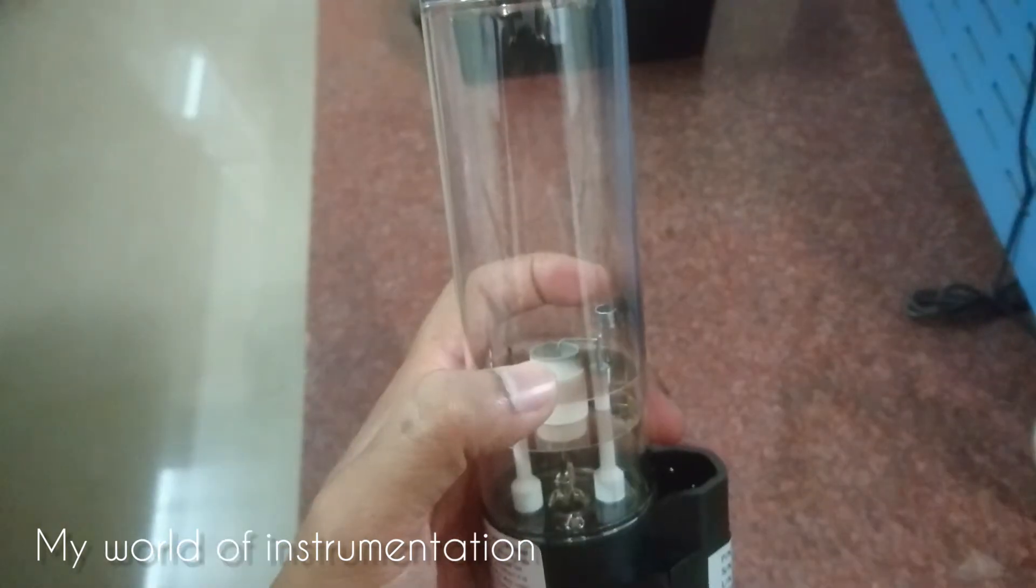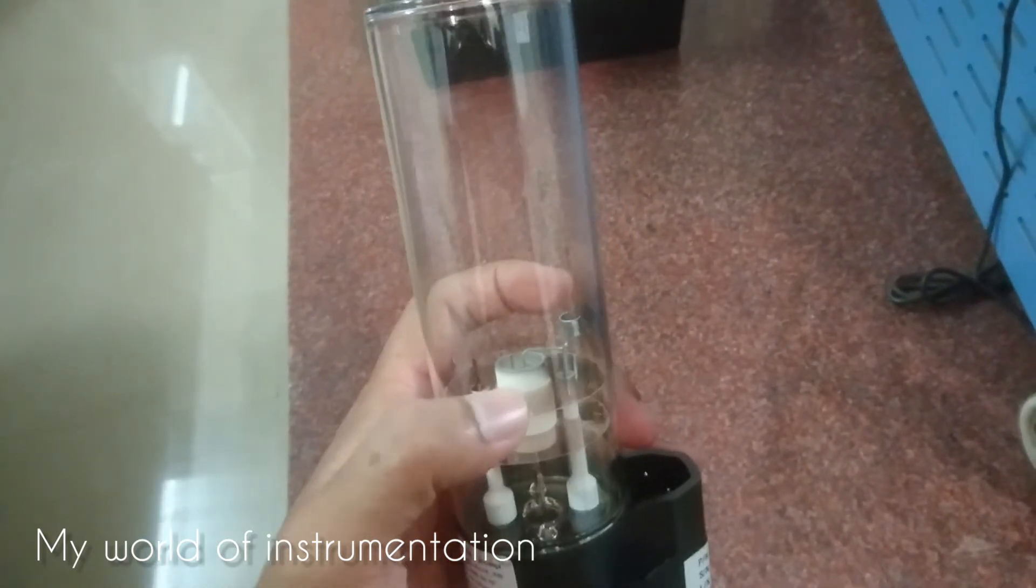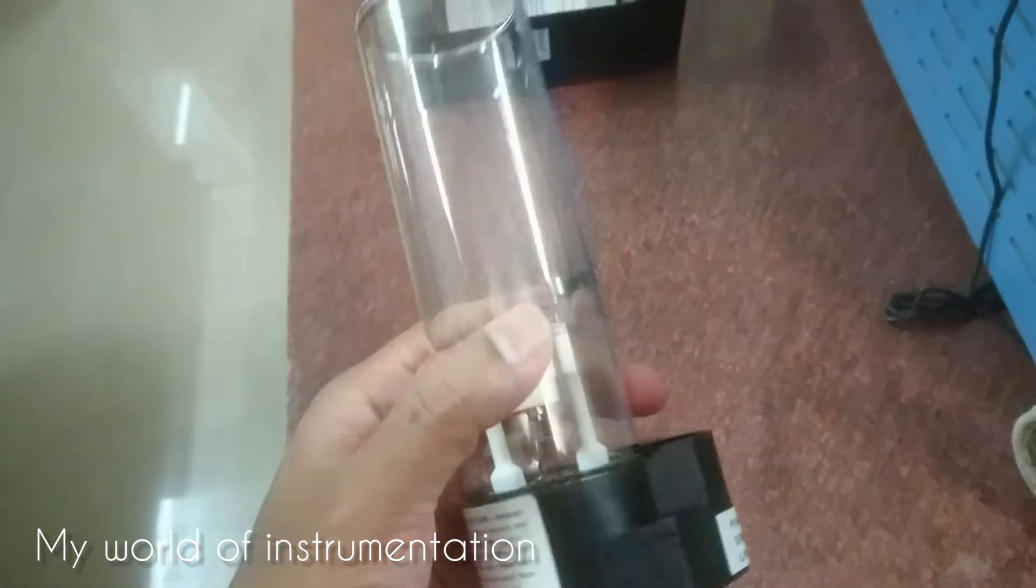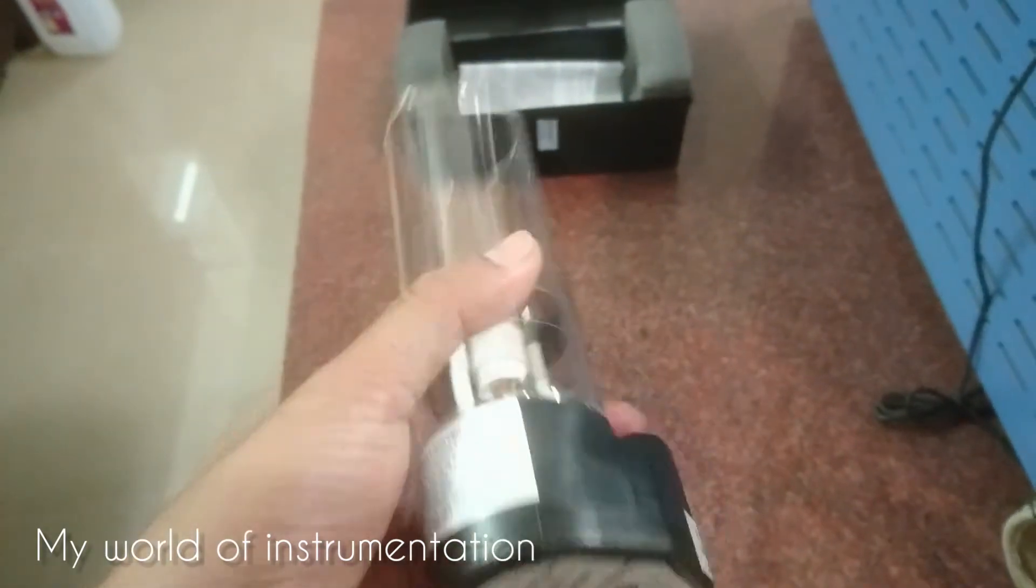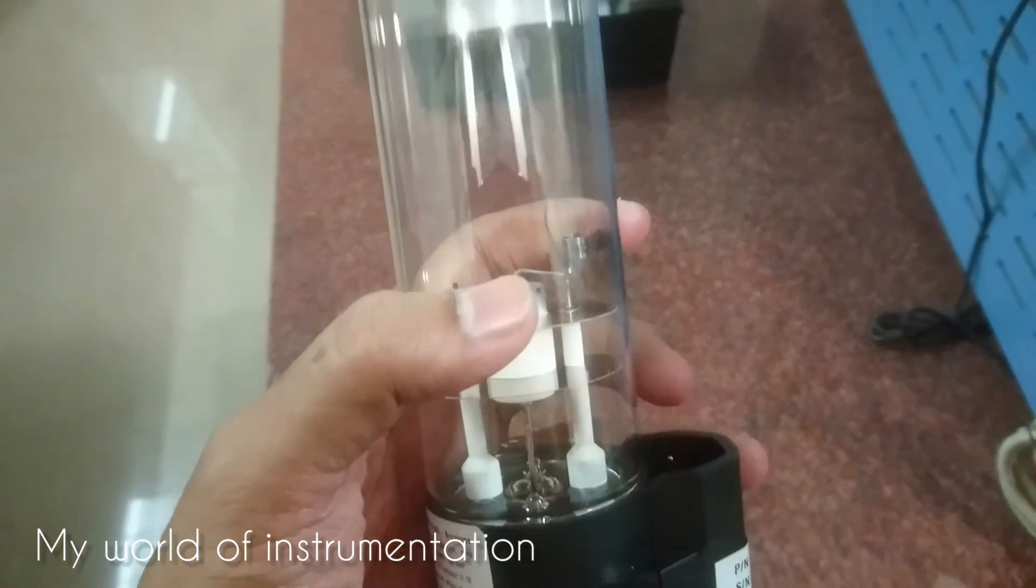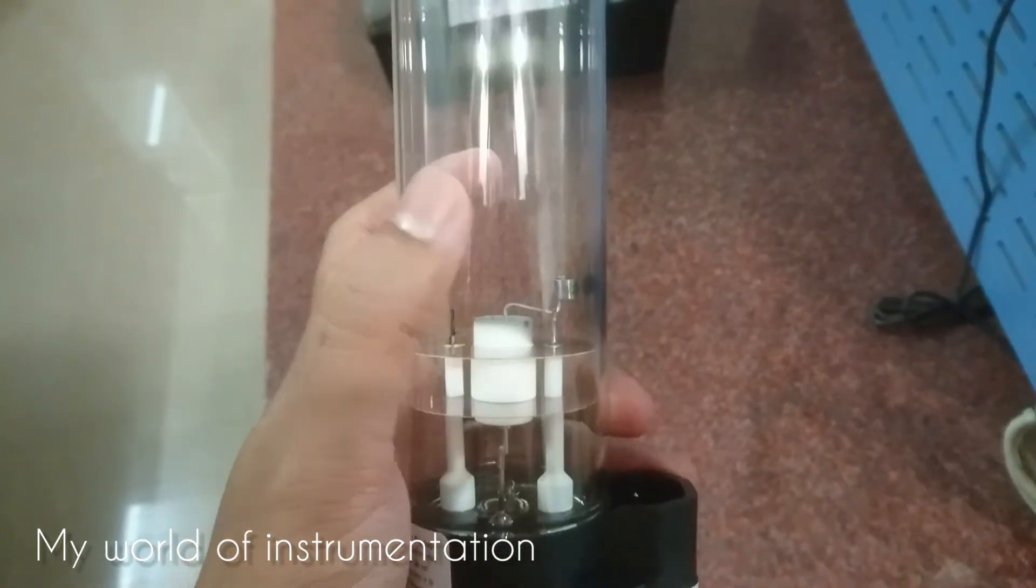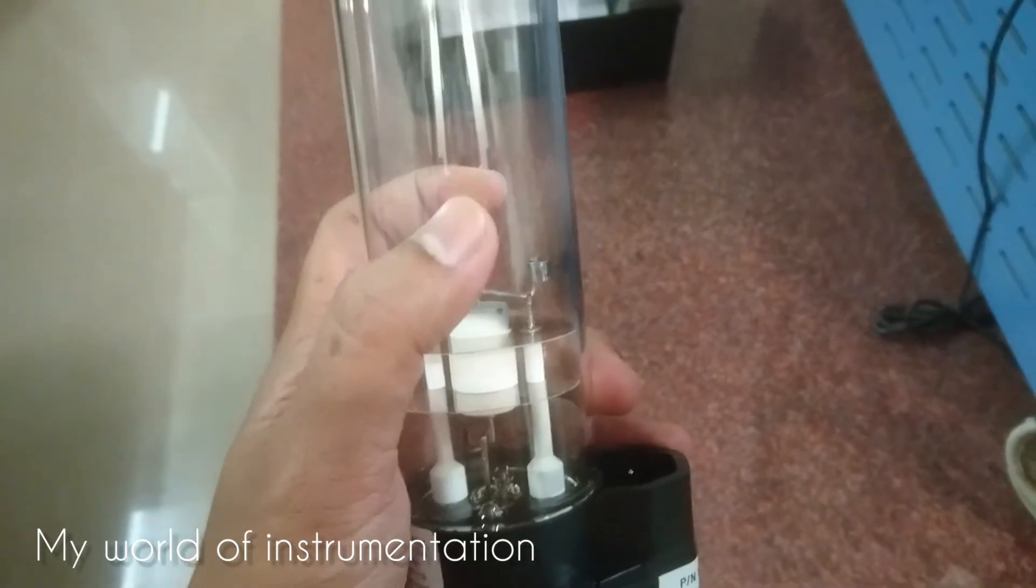This hollow cathode is made of the element to be determined. So here the element is magnesium, so the hollow cathode is made of magnesium. These are sealed in a glass tube filled with an inert gas, that is neon or argon, at a pressure of between one Newton per meter square and five Newton per meter square.